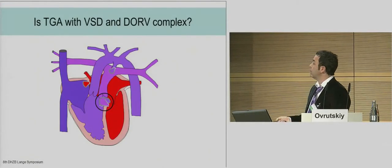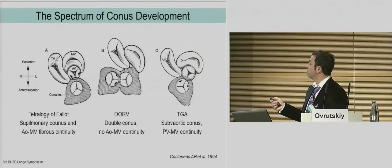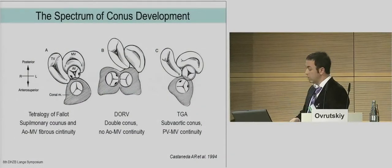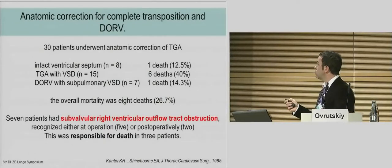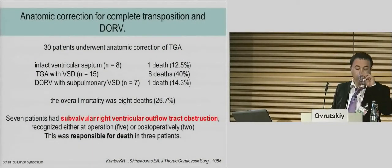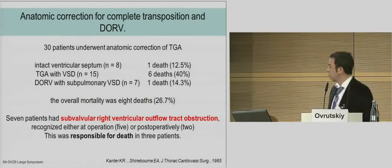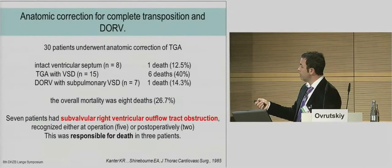If we also have double outlet — is it complex? I think it is complex, first because of the different position of the conus: double conus or subaortic conus for TGA, and we should know it before operation. Early results were not good: publication from 1985 showed 27% mortality. Subaortic ventricular outflow tract obstruction was responsible for death in three patients, and was recognized either at operation or postoperatively. Therefore we need this diagnosis before the operation.